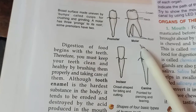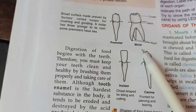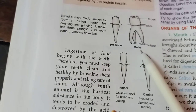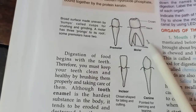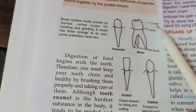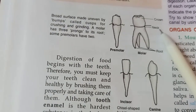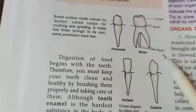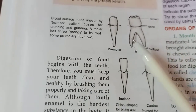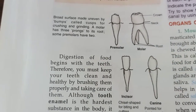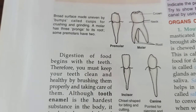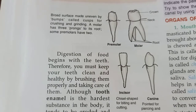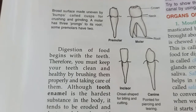Premolars are responsible for grinding food, and molars are responsible for crushing as well as grinding of food. The molar is divided into three parts: the upper part is known as the crown, the middle part is known as the neck, and the lower part is known as the root. You have to draw all four diagrams in your biology copy.